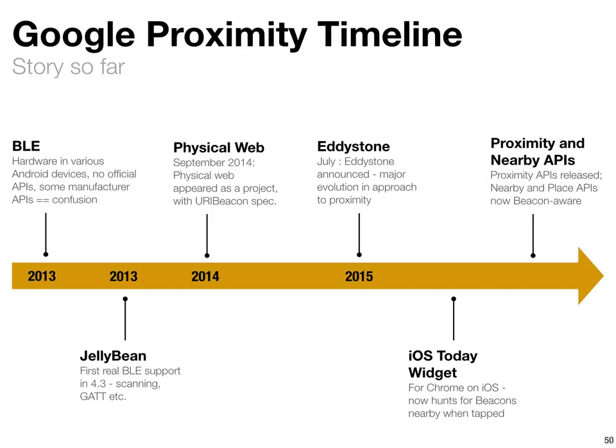To summarize Google and proximity in 2013 and 2014: they rolled out support for Bluetooth Low Energy in their hardware and provided some core BLE APIs — and that was kind of it. Then they launched Physical Web, which was positioned as a project without a full ecosystem but got a lot of people interested, and physical hardware beacons supporting Physical Web began to appear pretty quickly.